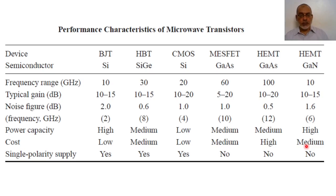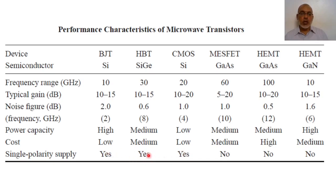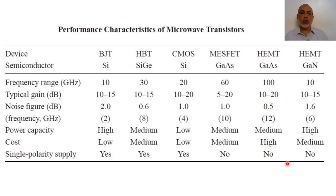From the point of view of power supply: the BJT can use a single power supply; the heterojunction bipolar transistor can use a single power supply; CMOS can use a single power supply. But for the MESFET and HEMT — whether gallium arsenide or gallium nitride — we need two power supplies: one for the gate (negative voltage) and one for the drain (positive voltage). So from the point of view of the biasing network, BJT, HBT, and CMOS have a simple biasing network. This is a brief comparison between the different types of microwave transistors.